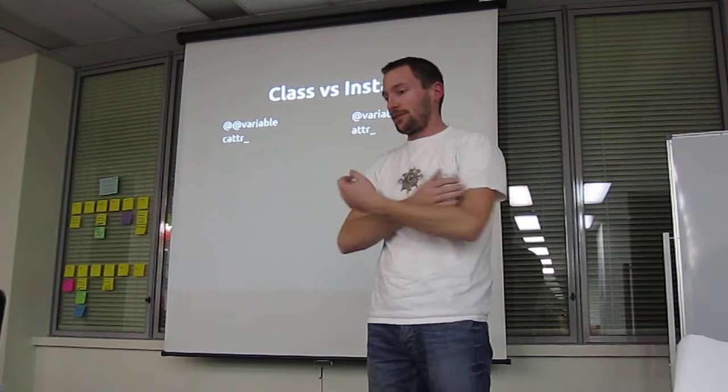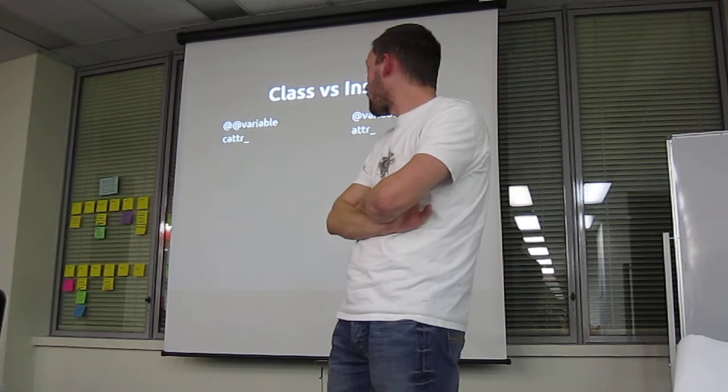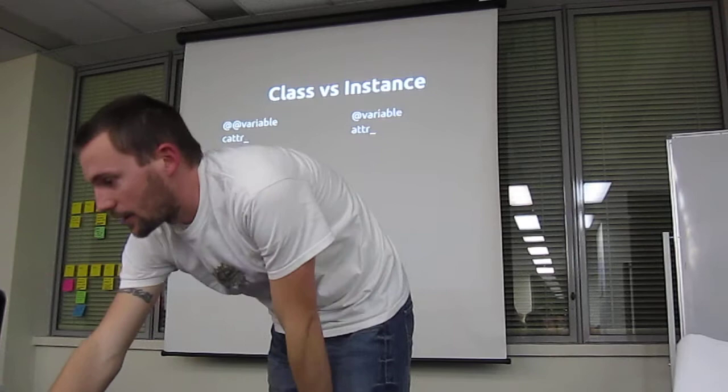Just real quick, the basic difference between class variables and instance variables: class variables are defined with @@ (double at) and instance variables with a single @ and the attribute name.